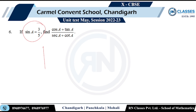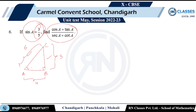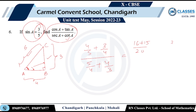Question six: given sin E = 3/5, find the value of (cos A + tan A) / (sec A + cot A). Using a 3-4-5 right triangle: cos A = 4/5, tan A = 3/4, sec A = 5/4, cot A = 4/3. The numerator is 4/5 + 3/4 = 16/20 + 15/20 = 31/20. The denominator is 5/4 + 4/3 = 15/12 + 16/12 = 31/12.